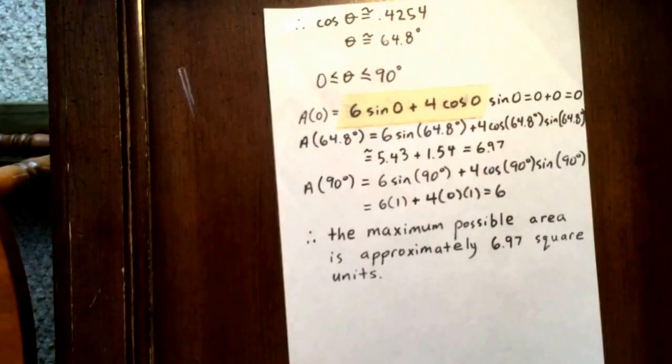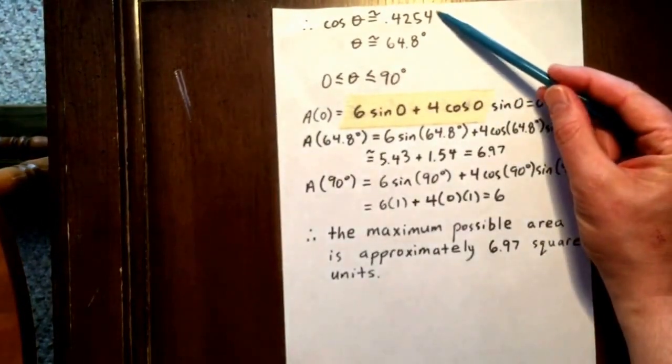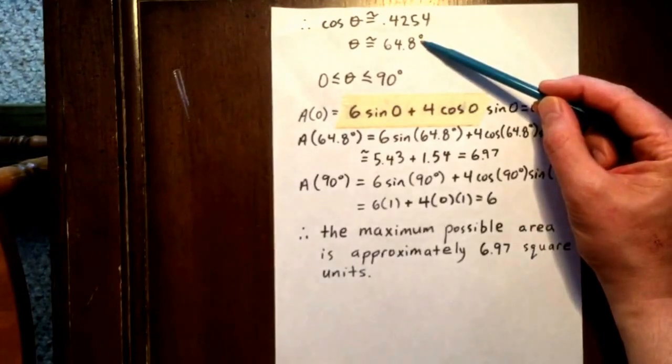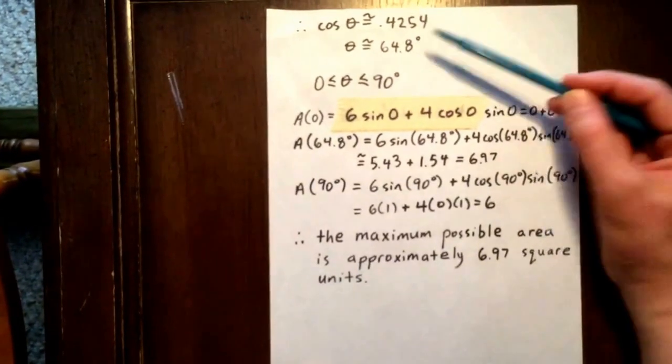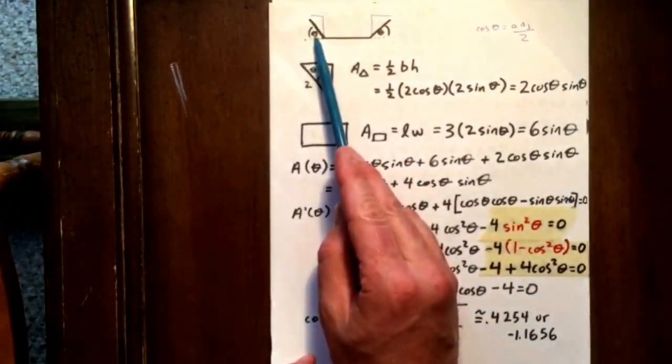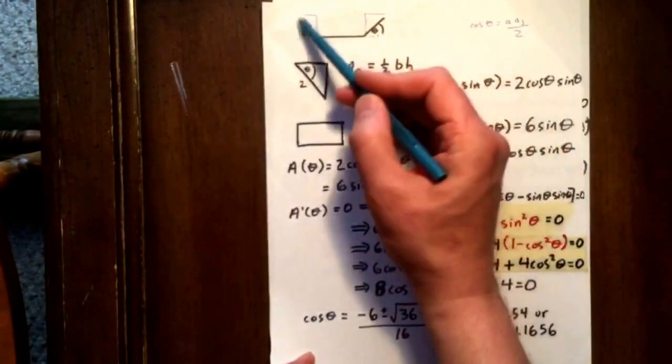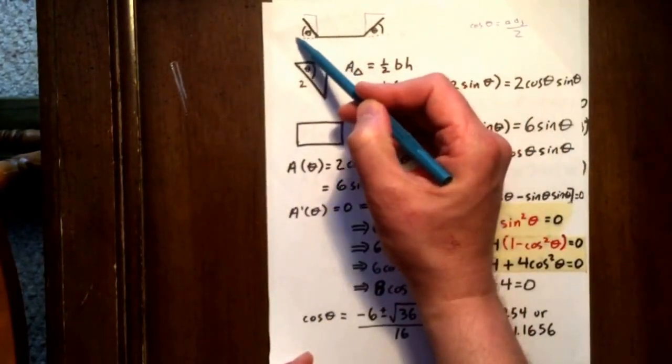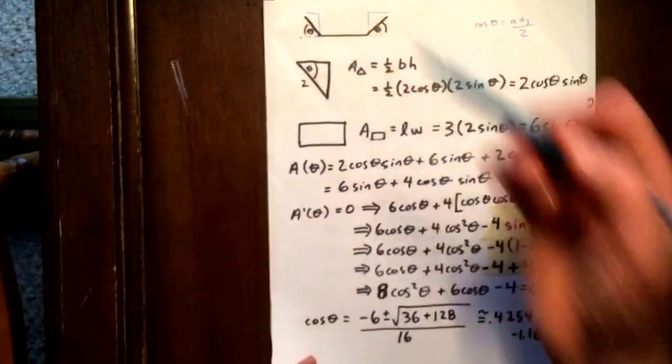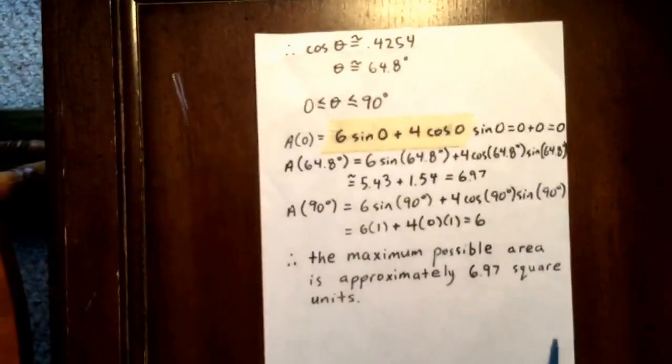We see that cosine of theta is approximately 0.4254, which means theta is approximately 64.8 degrees. We look at our domain, and instinctively, we see that theta has to be between 0 and 90 degrees. It might be really small or really big, but it has to be between 0 and 90.